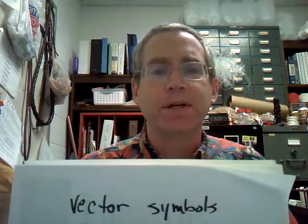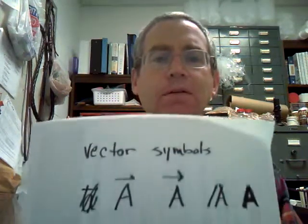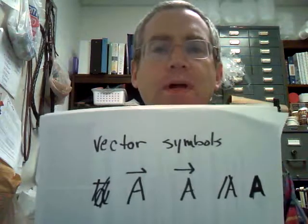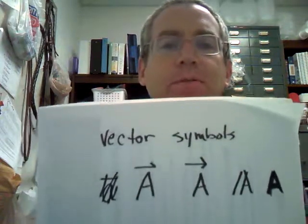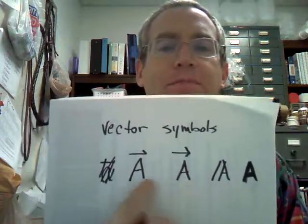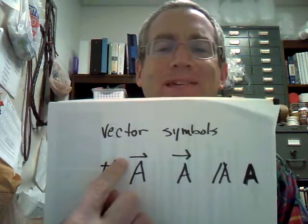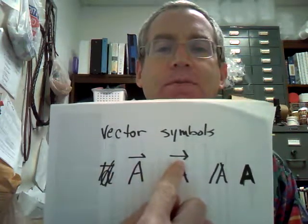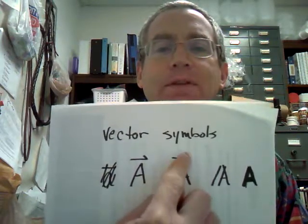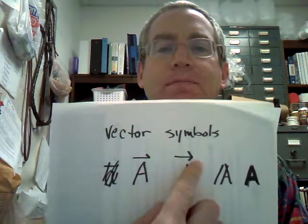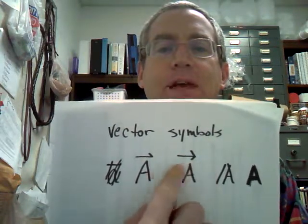So, vector symbols. There are different ways of representing it. And so these are the four basic ways that you're going to see to represent vector symbols here. This is the way that I tend to do it because it's easy to write. However, sometimes when printing, you'll get the double, sort of the double head there. These indicate direction.